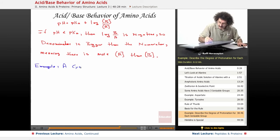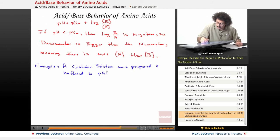Alright, so a cysteine solution was prepared and buffered to a pH equal to 8.2.